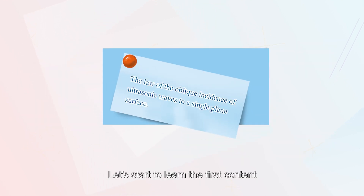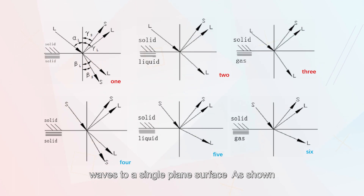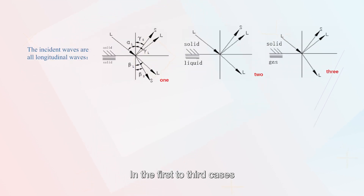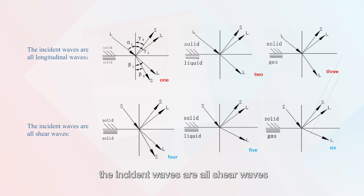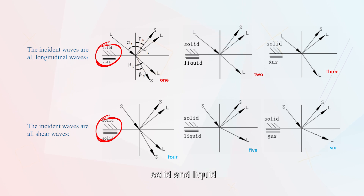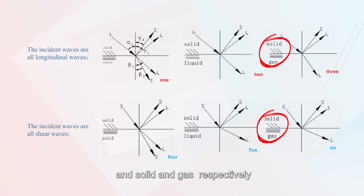Let's start to learn the first content: the law of oblique incidence of ultrasonic waves on a single plane surface. It is divided into six cases. In the first to third cases, the incident waves are all longitudinal waves. In the fourth to sixth cases, the incident waves are all shear waves. The interfaces are solid-solid, solid-liquid, and solid-gas, respectively.